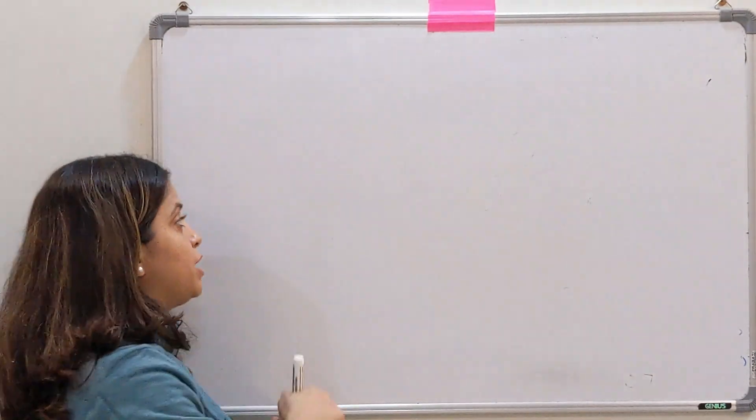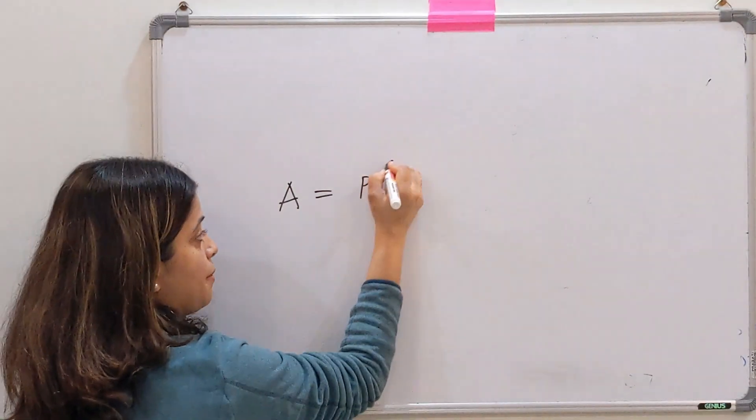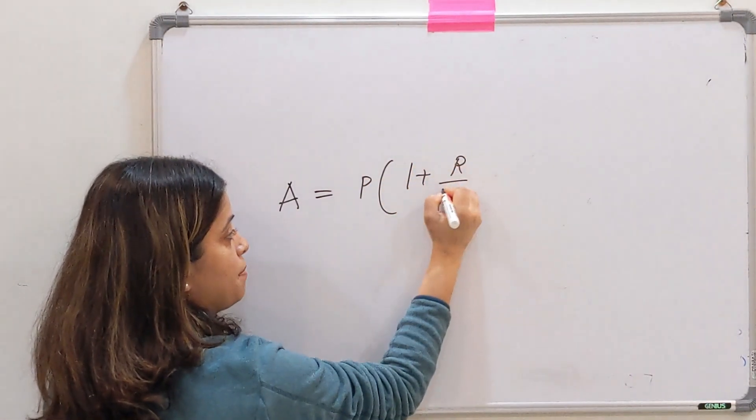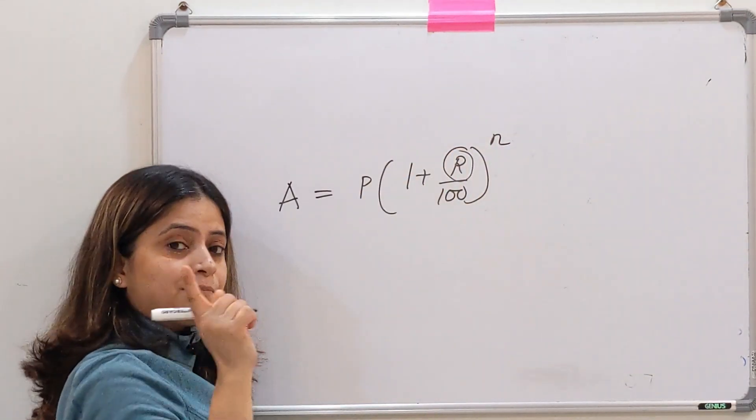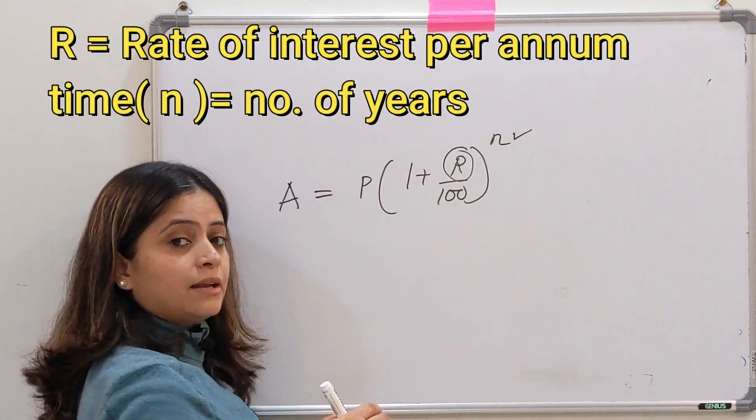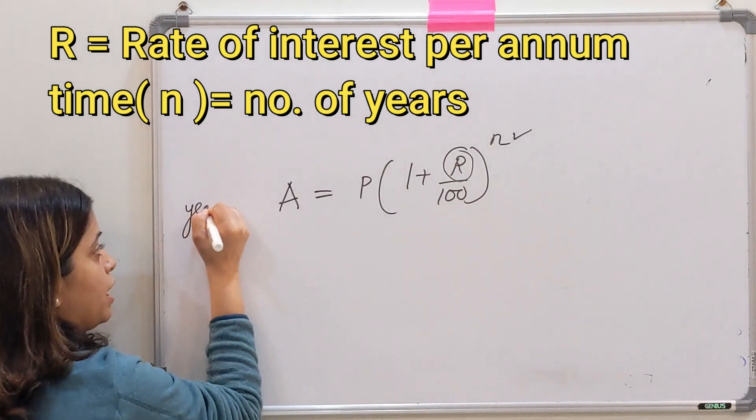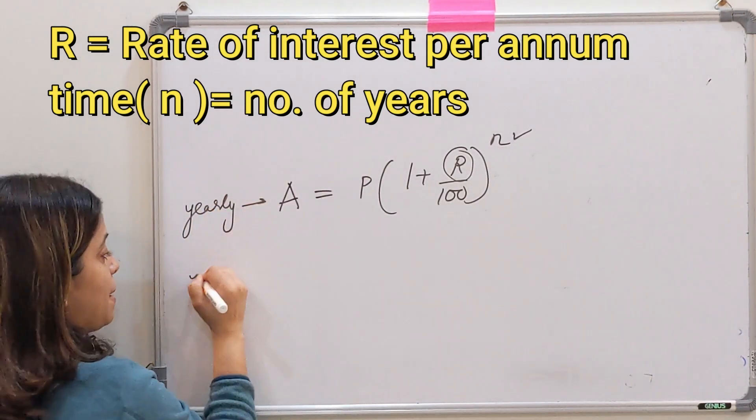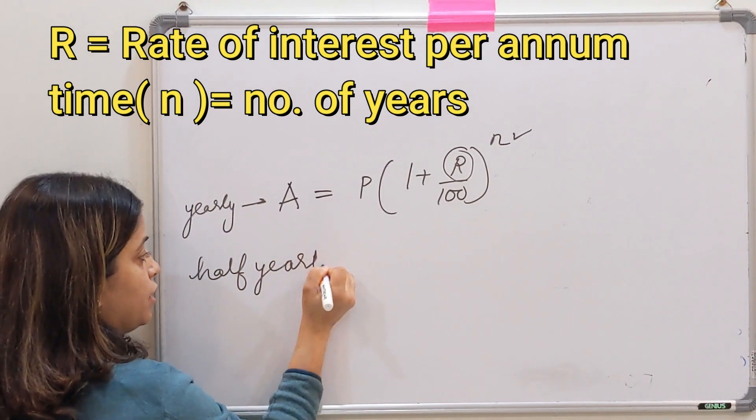When interest is compounded yearly, हमारा formula होता है P into 1 plus R upon 100 whole to the power n, जहां R आपका rate of interest per annum है और n is the number of years. But when this becomes half-yearly, when interest is compounded half-yearly होता है,